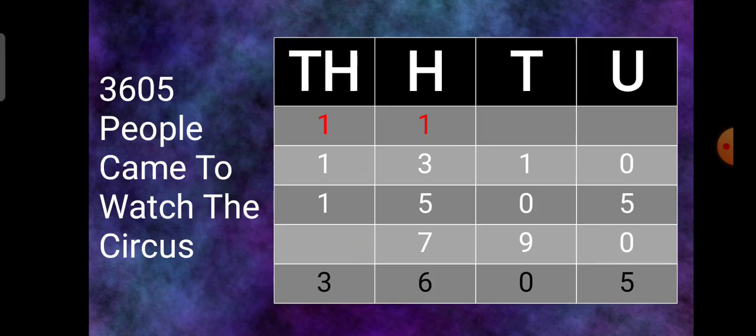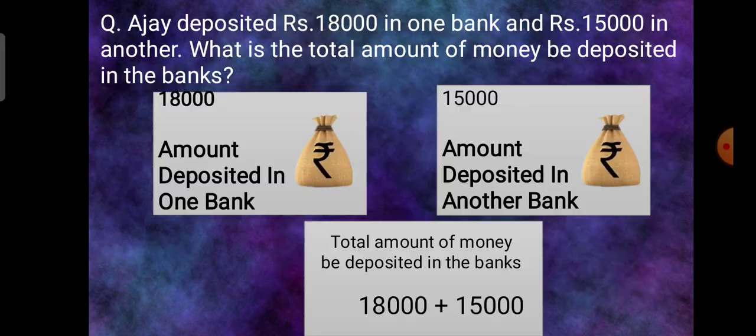Here we will make the column thousands, hundreds, tens, units. That is 1310 plus 1505 plus 790. Here the plus sign is not put, so you put the plus sign. So the answer is 3605. You have to write this statement: the answer is 3605 people came to watch the circus.